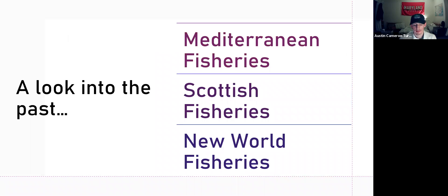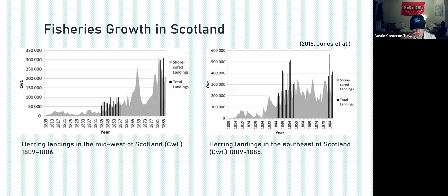Taking a look into the past can help us provide context for our current problems in fisheries. In Mediterranean regions, naturalists recorded fish species and collected data in the early 20th century that showed an increase in fish catch weight, which is the total weight of fish in one ship. In Scottish fisheries, there is anecdotal evidence and historical data showing increases in weight of fish landings. In stories told by fishermen, there weren't enough fish due to overfishing. However, the actual fish populations fluctuated throughout the 19th century.